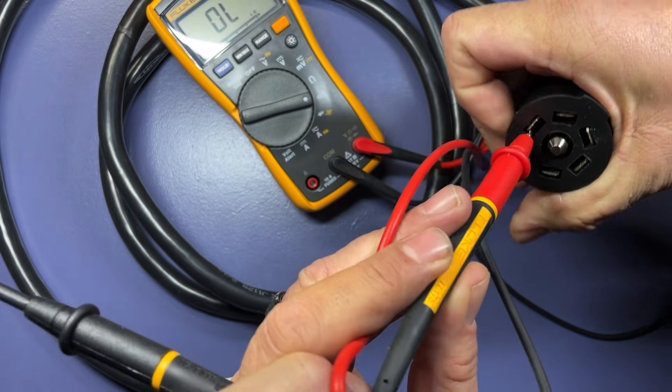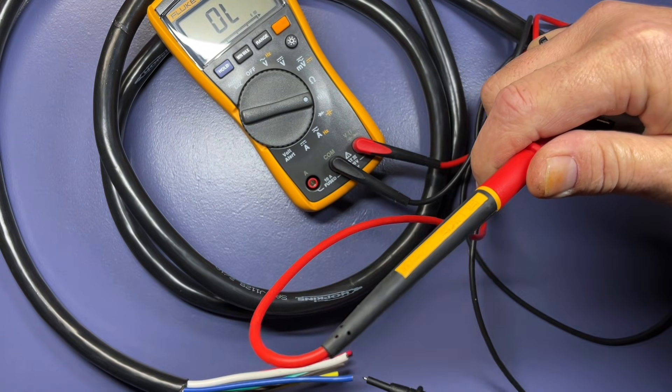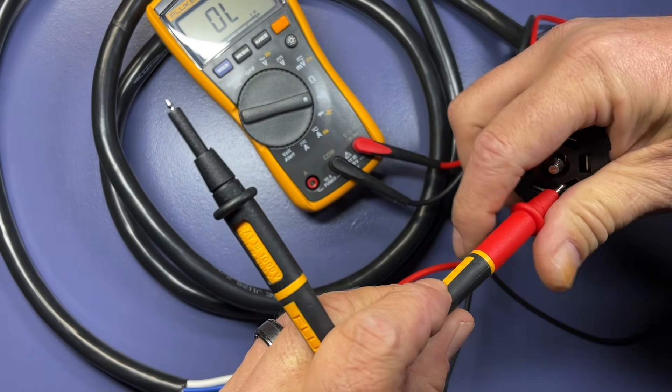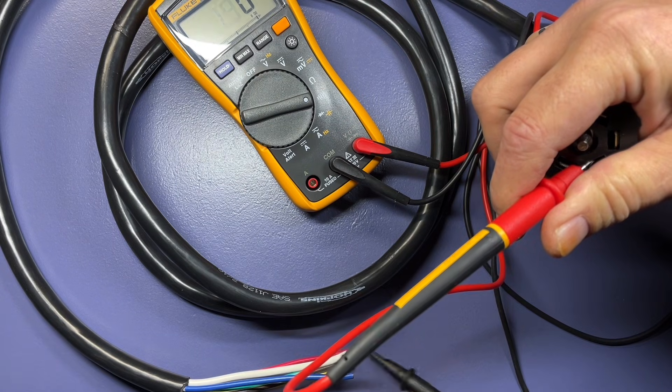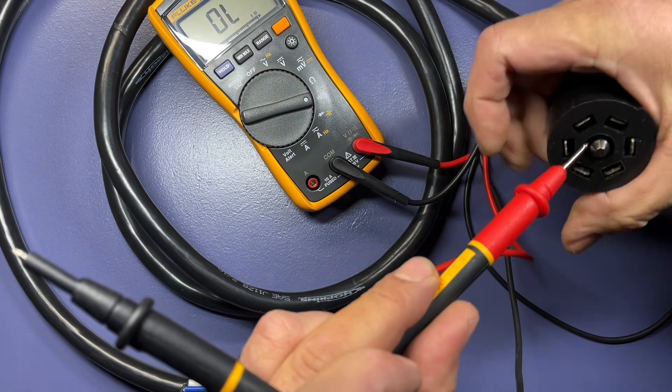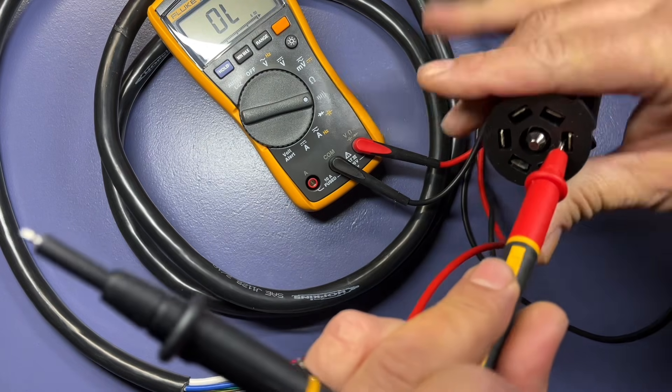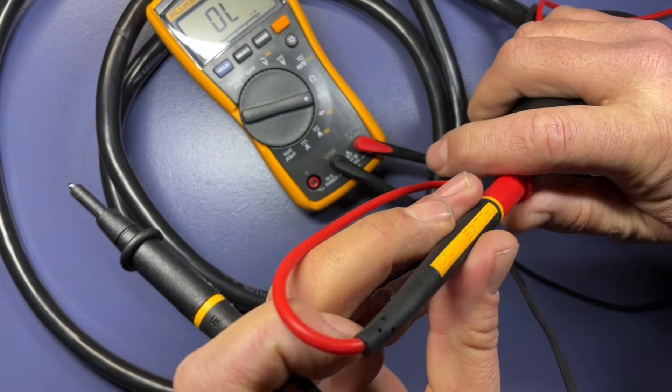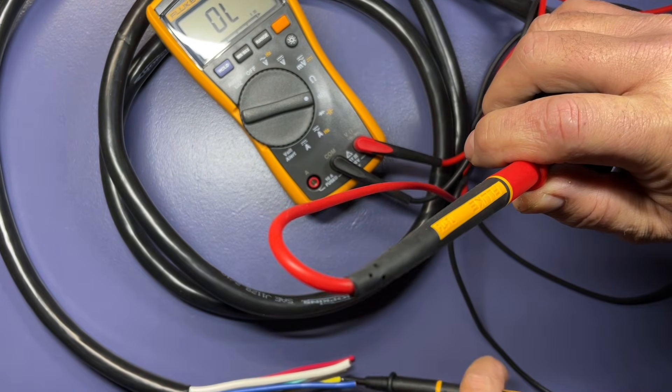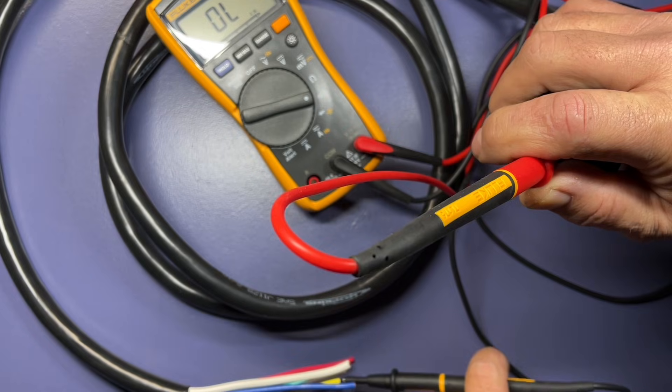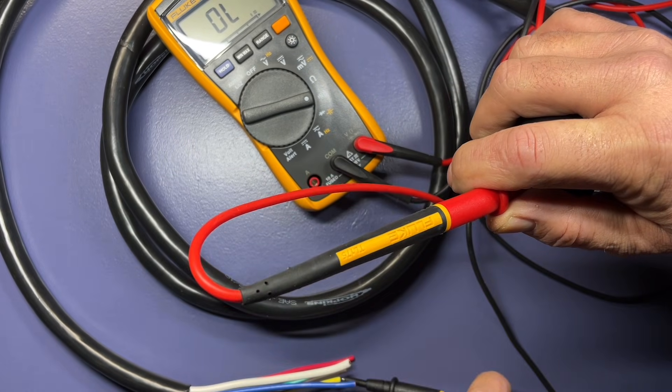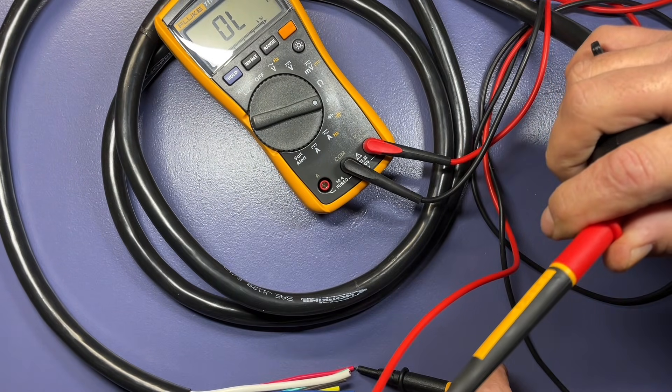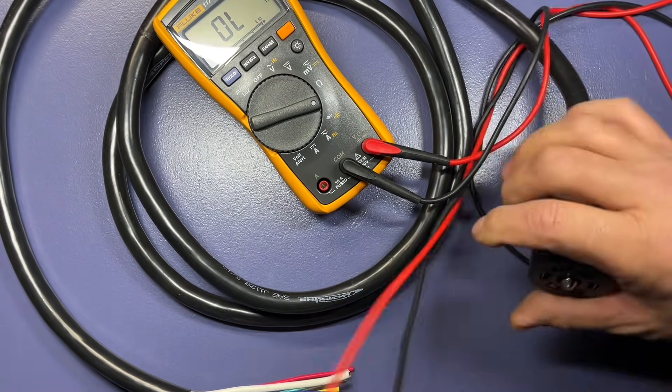This one should be our right turn. In the RV standard, that's going to be the brown. So it should be this one. And it is. Our left turn will be over here. That will be red. And it is. And then we have our running lights, which should be here. Those are going to be your green. And the center one will be your reverse lights, which should be yellow. There it goes. This is my error.